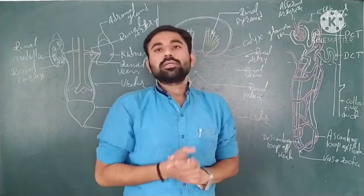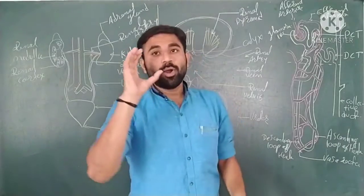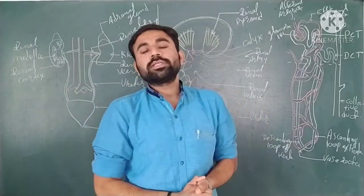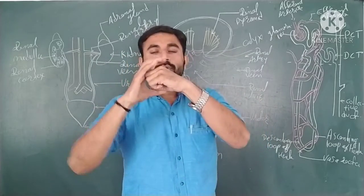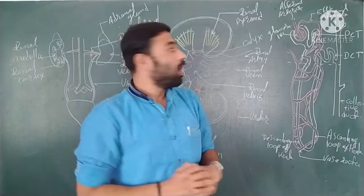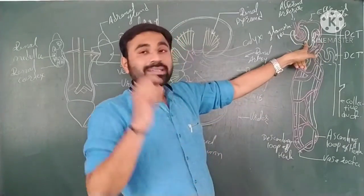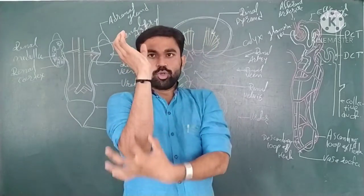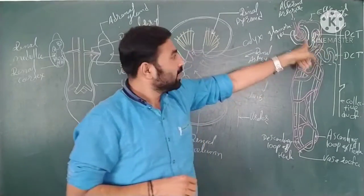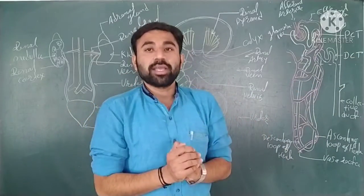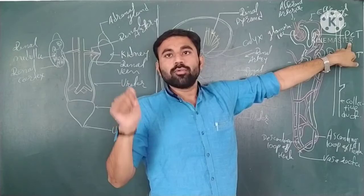The Bowman's capsule and glomerulus together are known as the Malpighian body. After the Bowman's capsule, the tubule begins with a neck region connecting the capsule to the tubule. After the neck, there is a convoluted area near the Bowman's capsule known as the PCT — proximal convoluted tubule.